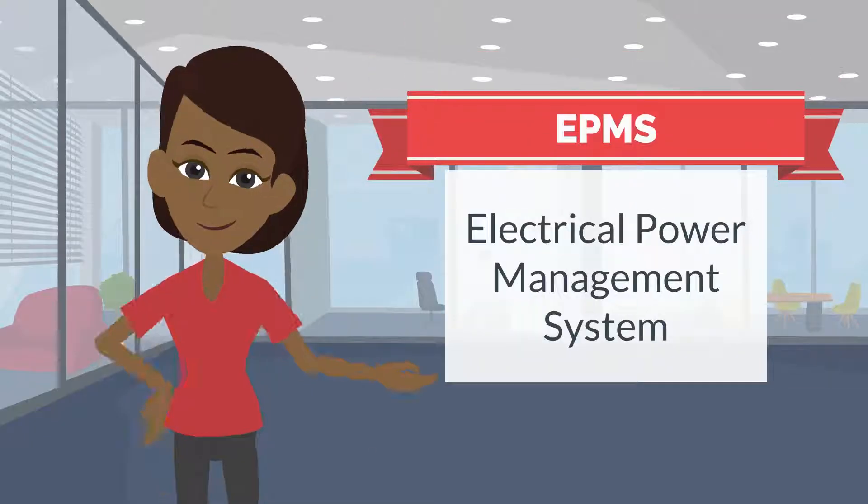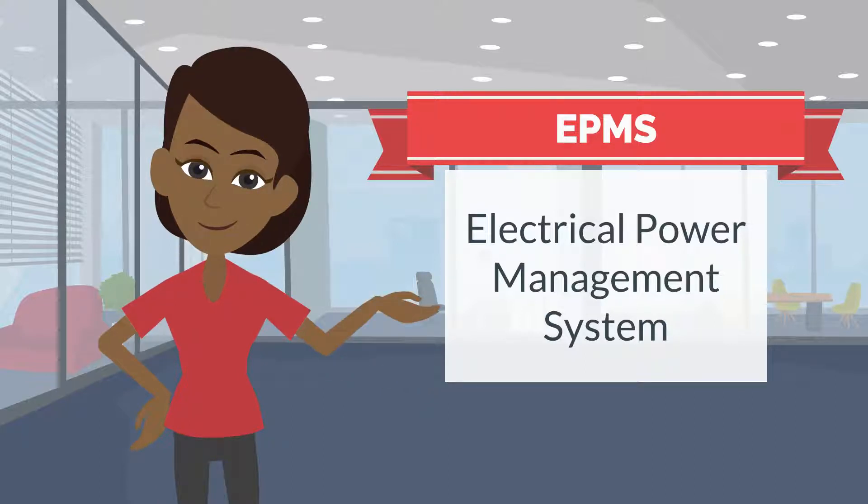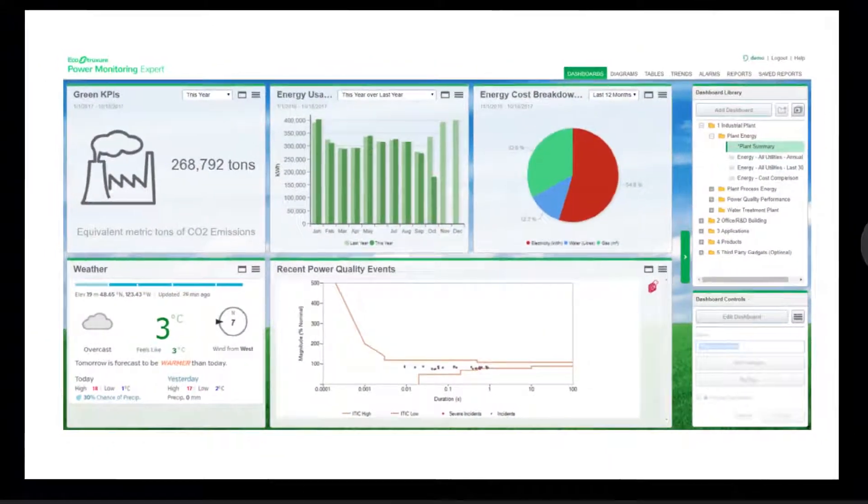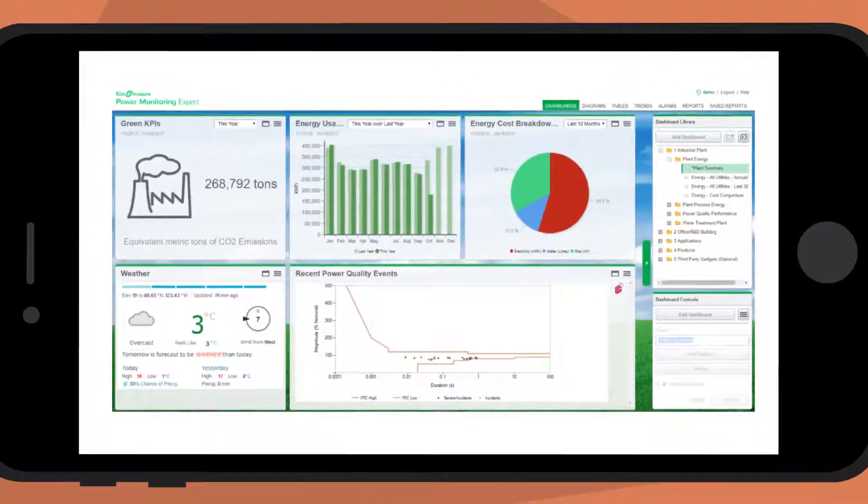An electrical power management system, or EPMS, does just that. It's a tool that goes beyond building automation to provide real-time power consumption and demand information from the equipment in your facility.